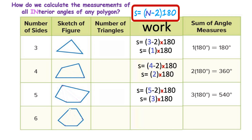The last one we'll look at before practicing is a hexagon. I can see it has 6 sides. In parentheses I write 6 for N, and 6 minus 2 is 4. The interior angles of any hexagon is 4 times 180, which tells me that's 720 degrees.